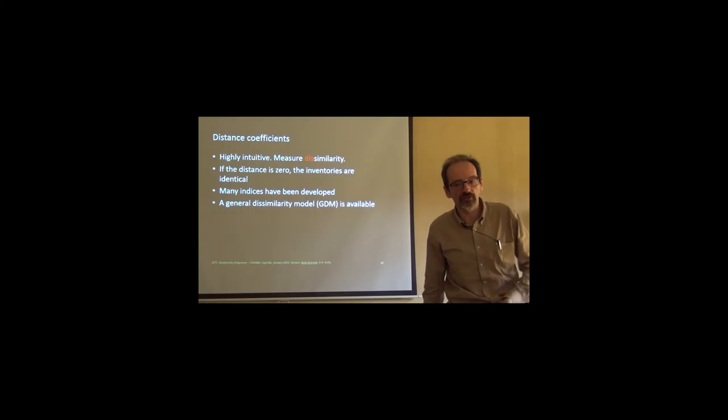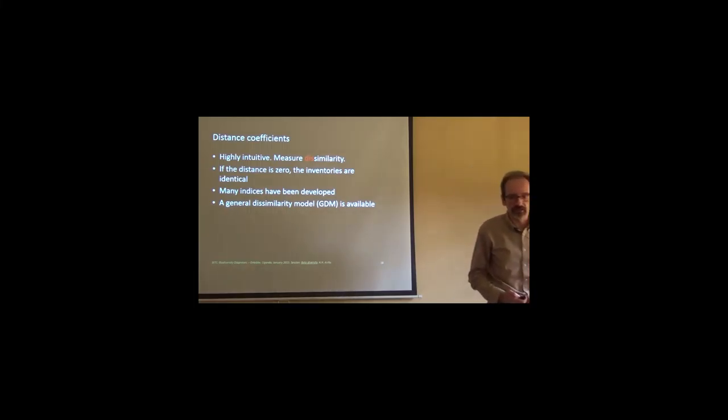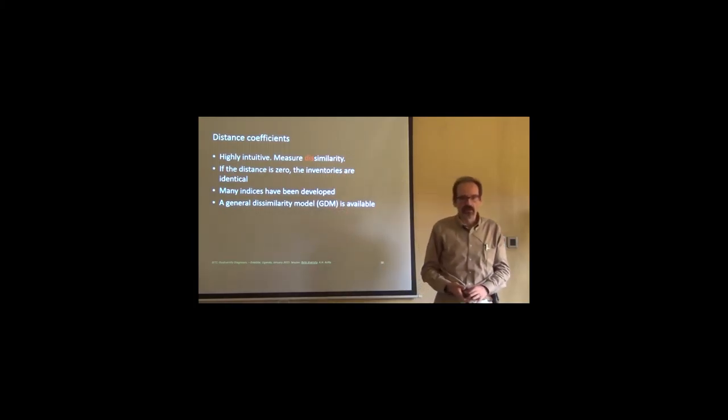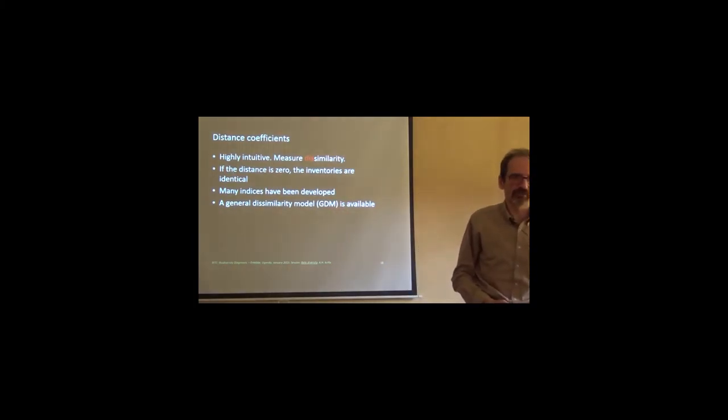This is what we normally do almost every day. So, we have the distance coefficient. We take into account the abundance data. And I finish very soon. They are very highly intuitive because they measure the similarity in a way that, such as if the distance is zero, the inventories are identical. Many indices have been developed, and also we now have a general dissimilarity model, or GDM, which is rather complicated, rather complex. And I won't get into the details of the mathematical details of it, but you also have the module for R in the pen drive that I circulated there.